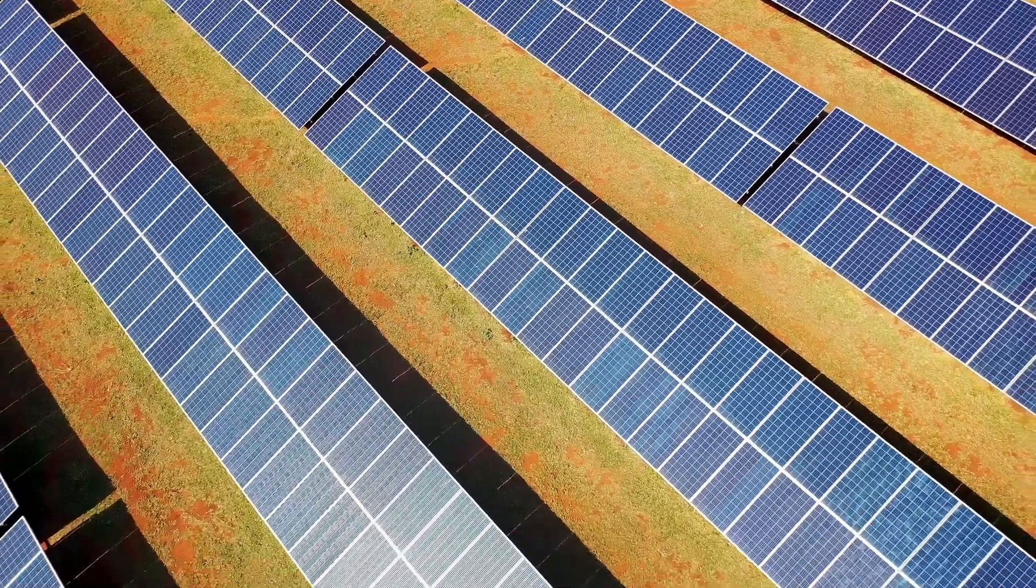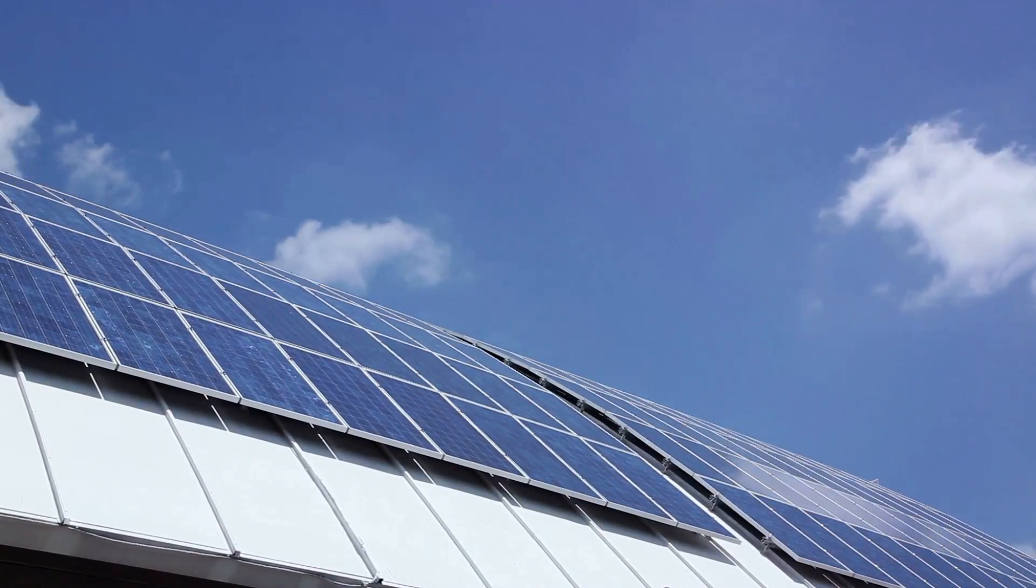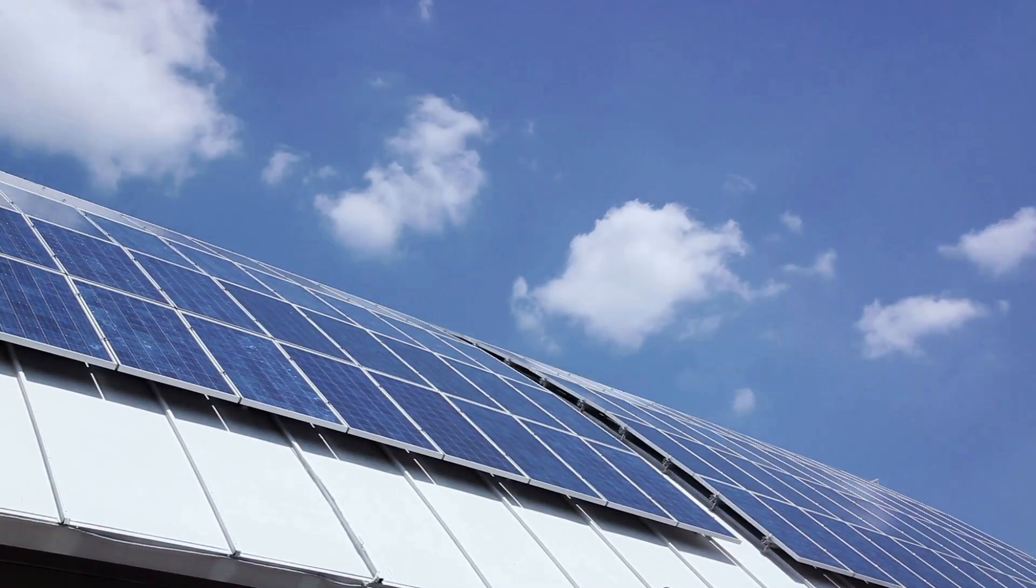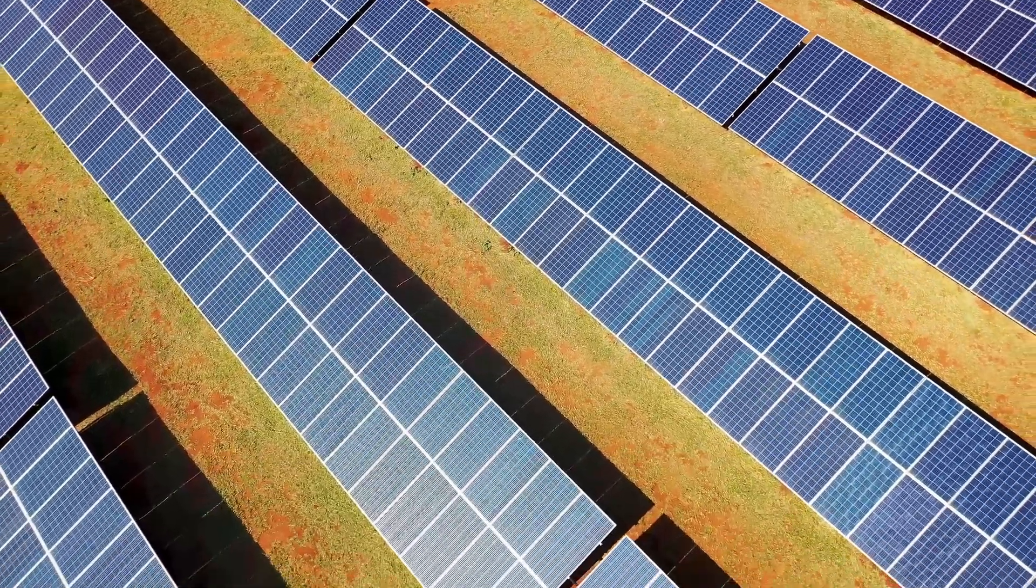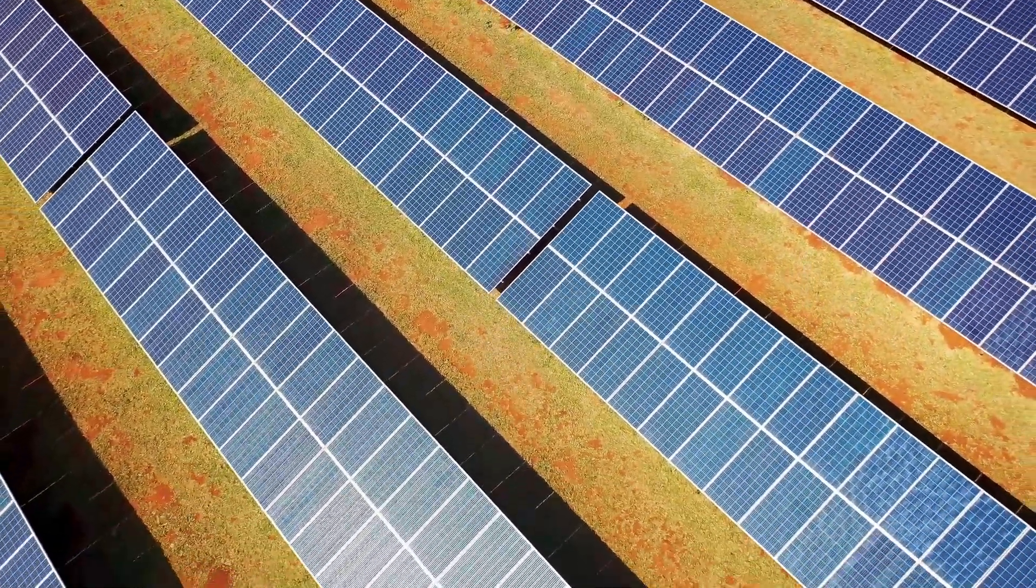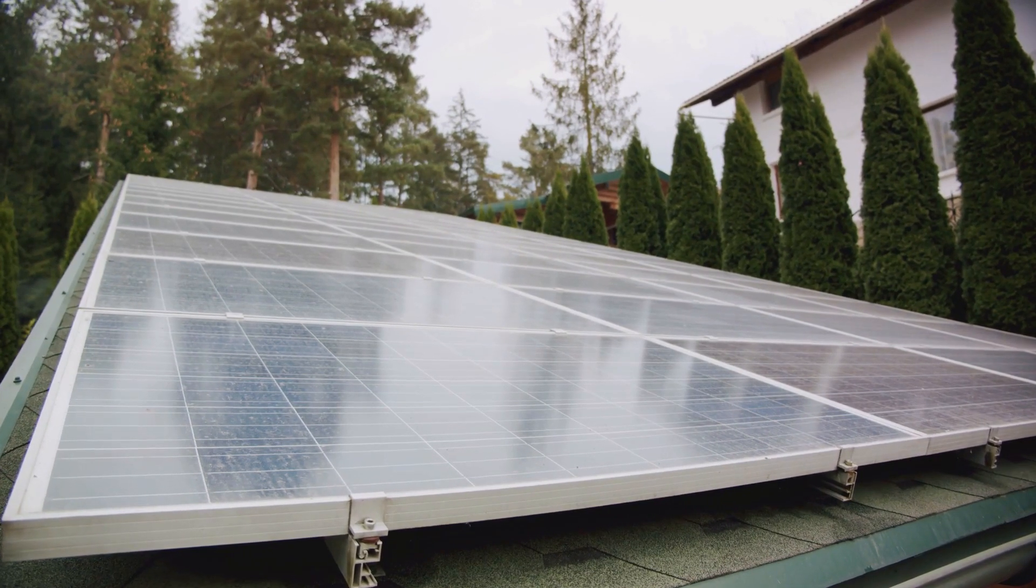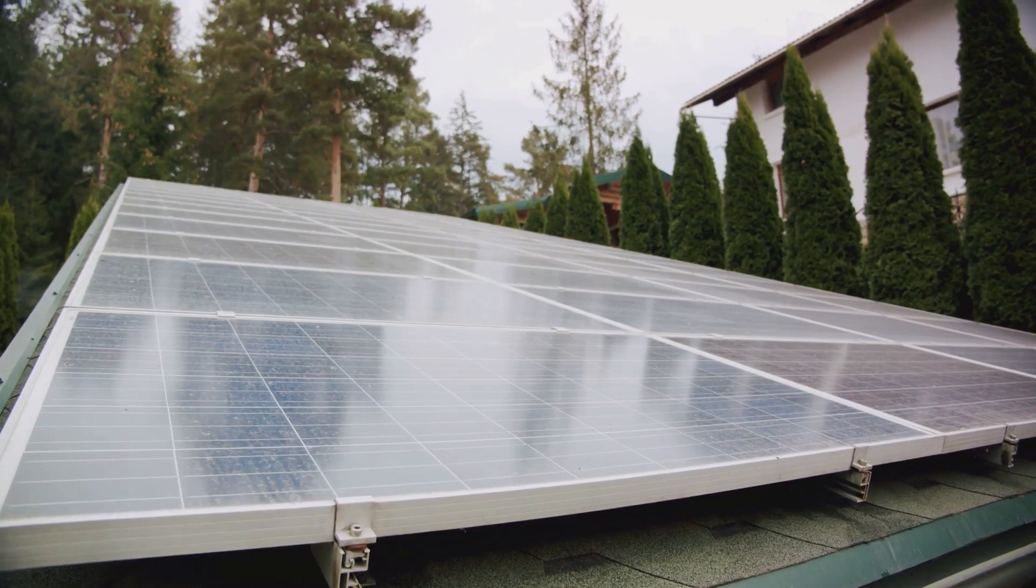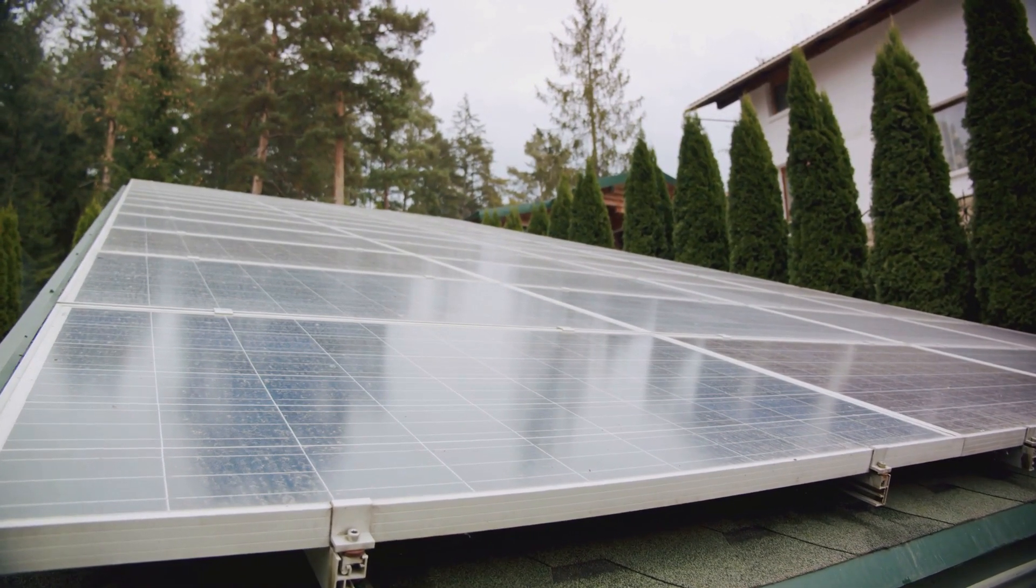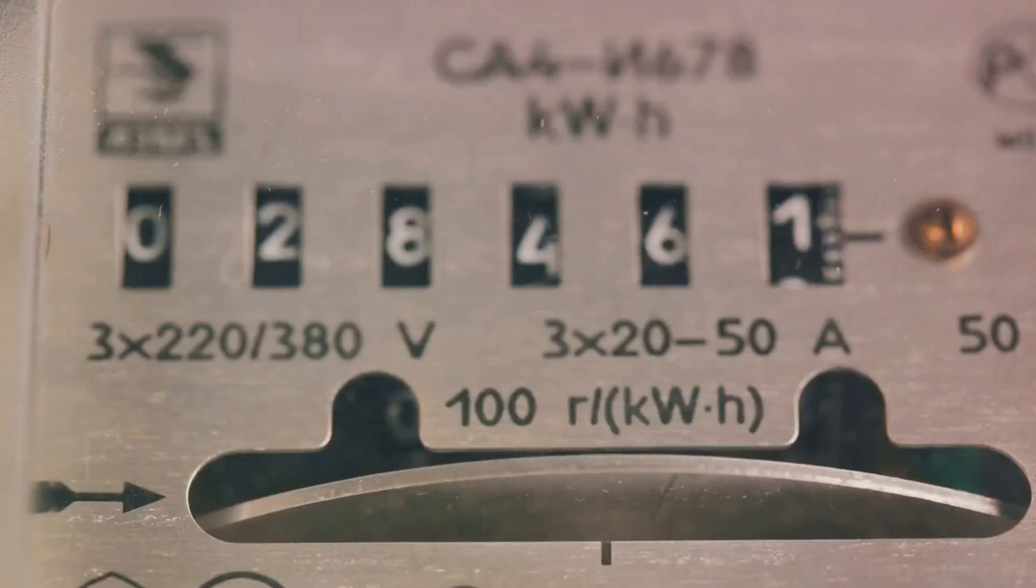This is where the credit system comes into play. When your meter runs backwards, you're earning credits with your utility company. These credits can be used when your panels or turbines aren't producing enough electricity, like at night or during less sunny or windy days. In essence, the grid acts as a giant battery, storing your excess energy for when you need it. And the best part? You're only billed for the net energy you use.